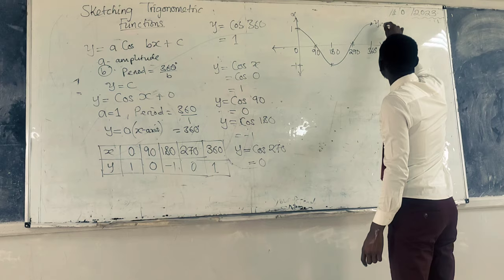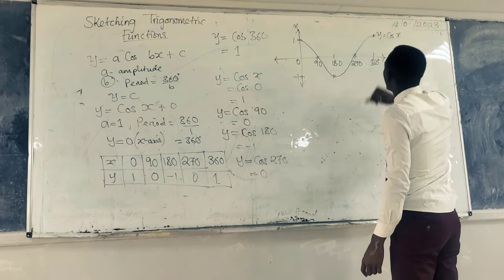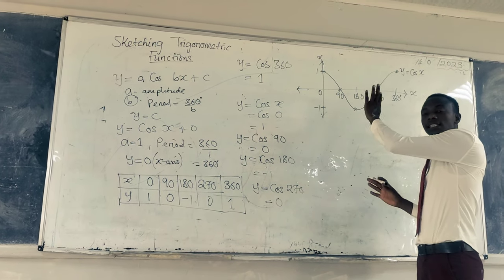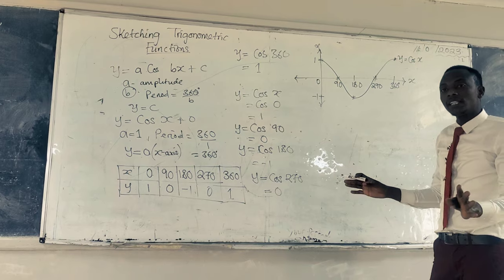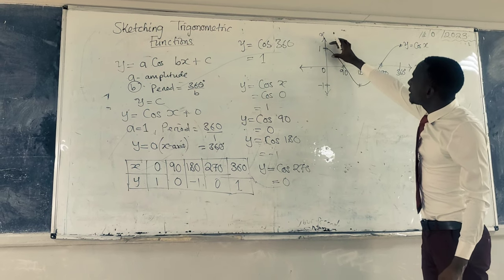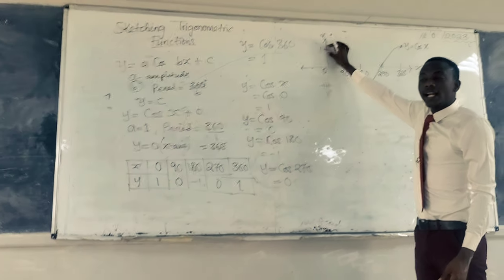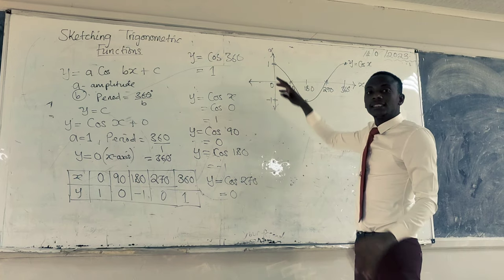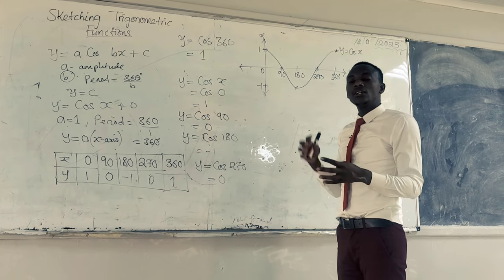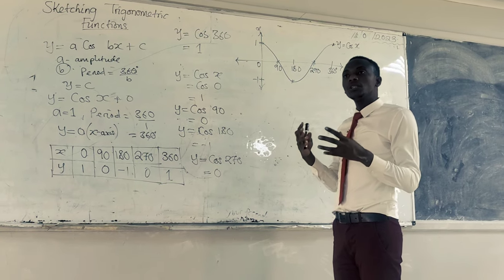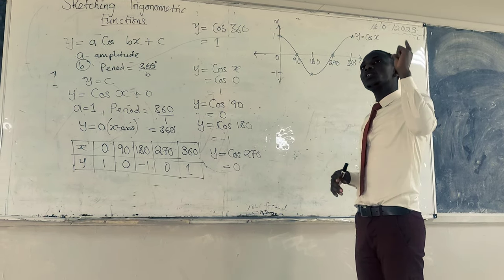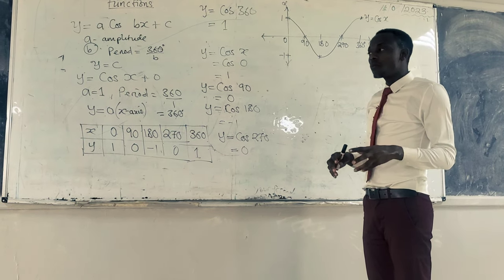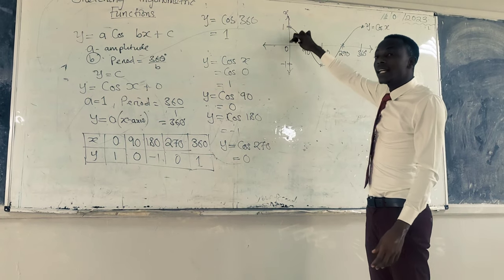We will label it to be Y equals cos X. So we can see that the cosine function, the cosine sketch can be differentiated from the sine sketch. The cosine function starts from the Y axis, whereas the sine function starts from the X axis.